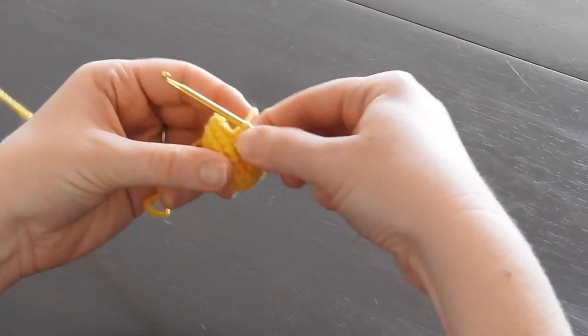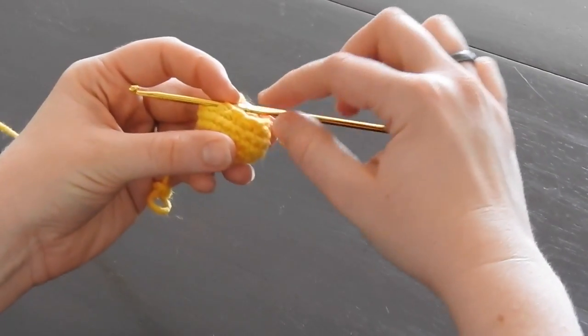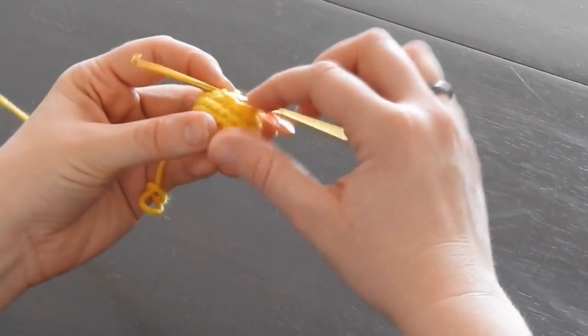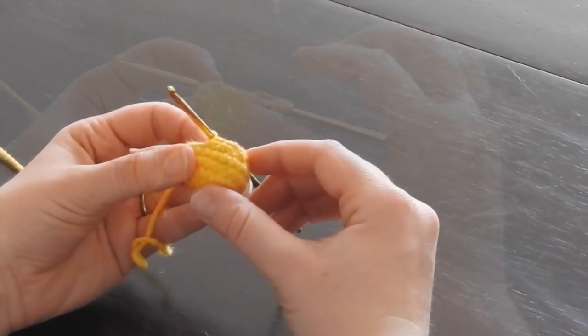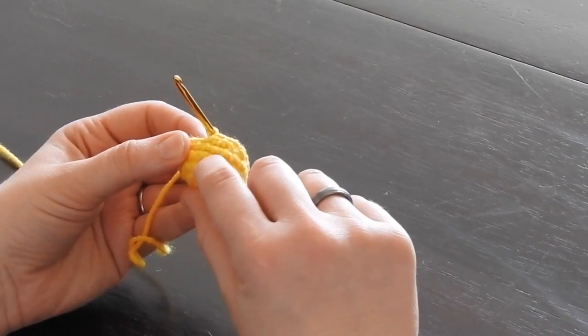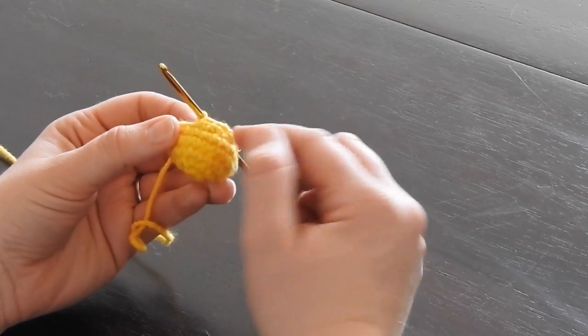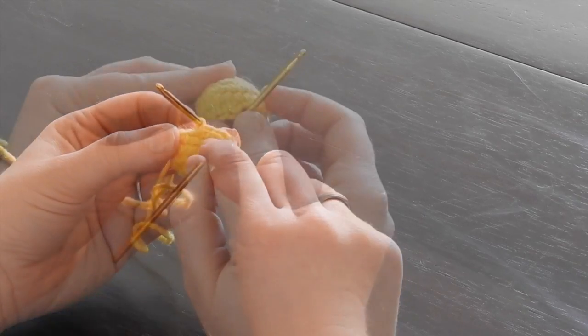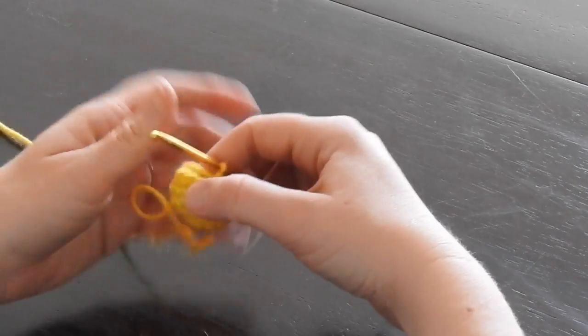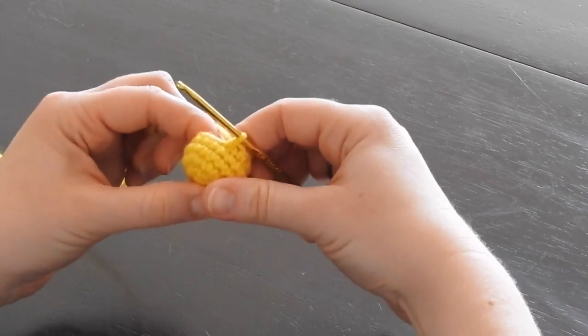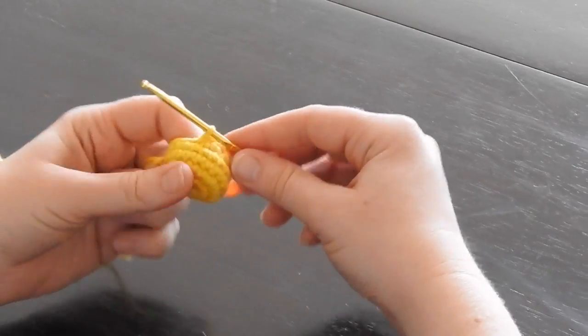The invisible decrease looks very similar to your regular single crochets that you've done. As you're working your way up, you really don't notice them very much. This is the technique I tend to use as much as possible.